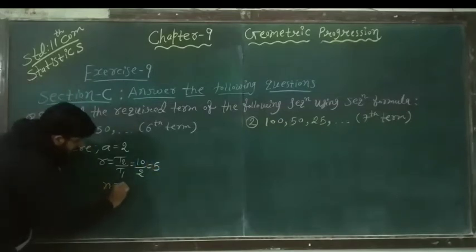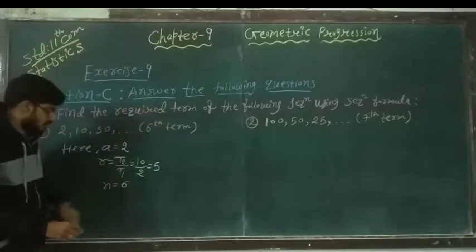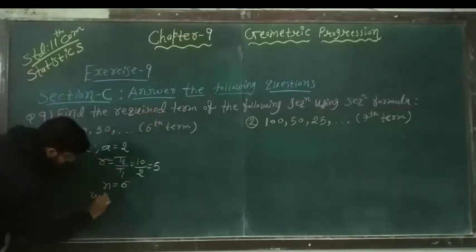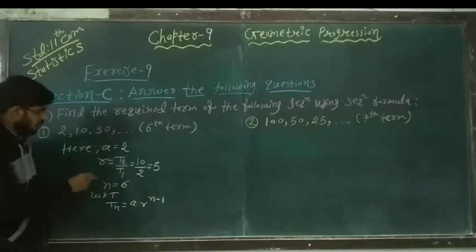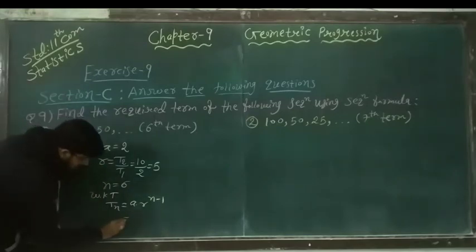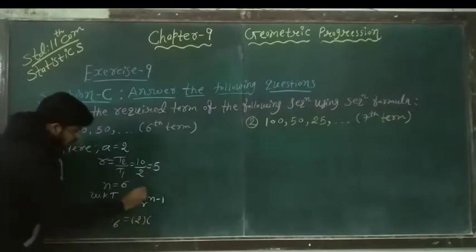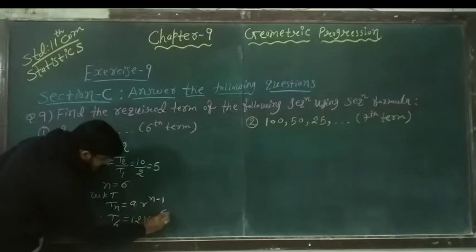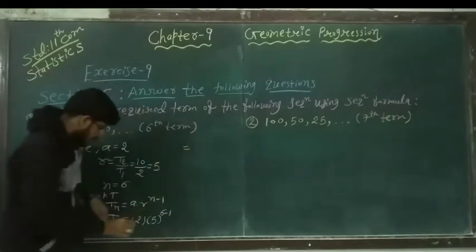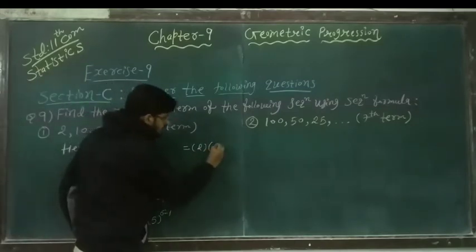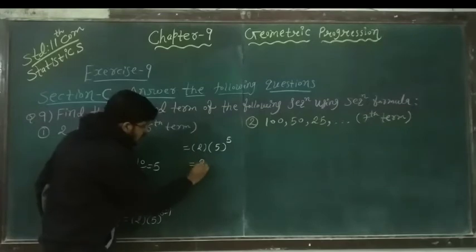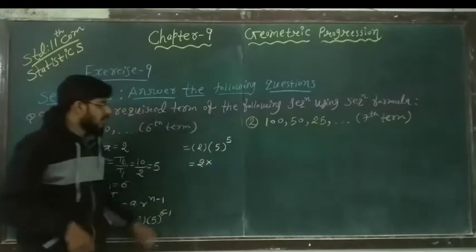And N is equal to 6, because we have to find out the sixth term. We know that the formula for T_N is equal to A into R raised to N minus 1. Now we put the values: T_6 is equal to A, which is 2, into 5 raised to 6 minus 1. This gives us 2 multiplied by 5 raised to 5.